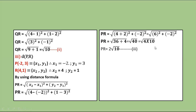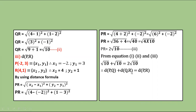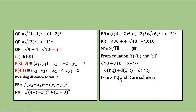From equations 1, 2, and 3, the largest distance is 2√10. PQ + QR = √10 + √10 = 2√10. Therefore distance PQ + distance QR = distance PR. Hence, points P, Q, and R are collinear.